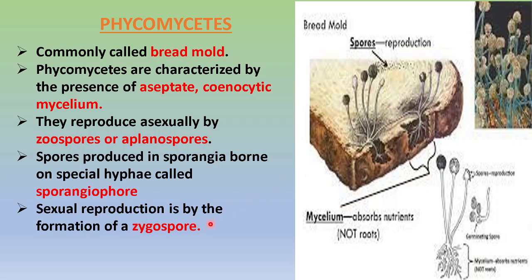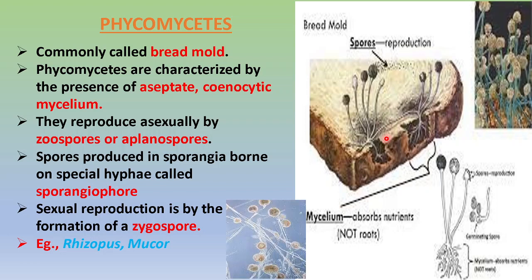Sexual reproduction occurs occasionally through the formation of a zygospore. Two hyphae come close together, form gametangia which fuse to form the zygospore, then undergo meiosis to produce sexual spores. Very common examples are the species Rhizopus and Mucor, which you will see growing upon bread pieces or sometimes upon rotten fruit or cooked food materials. This concludes the first class, Phycomycetes.